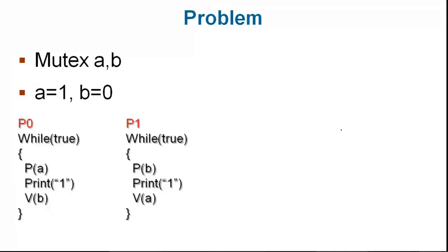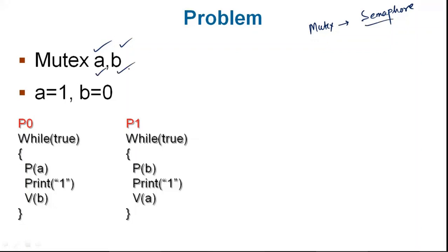In this question, A and B are mutual exclusion variables. You can use a mutex variable or a semaphore — wherever the term mutex is used, mutex means mutual exclusion variable. So there are two mutex variables, A and B. The value of A is 1 and the value of B is 0 initially.